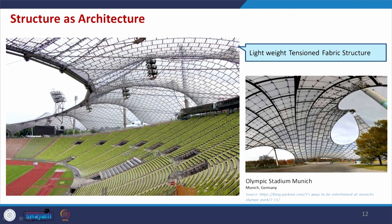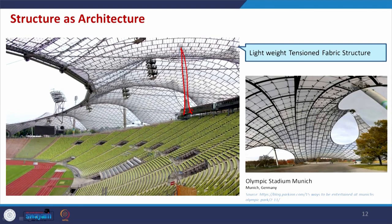For making the structure light, the solution is tensile fabric structure. The Skysong structure at Arizona State University is an arrangement of vertical posts with tension fabric tied with cables to posts fixed outside, so all spectators get an uninterrupted view of the activity played in the middle. This is a structural arrangement where the structure itself, with minimalistic form creation, acts as architecture.